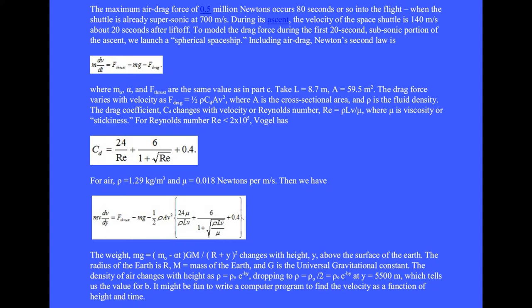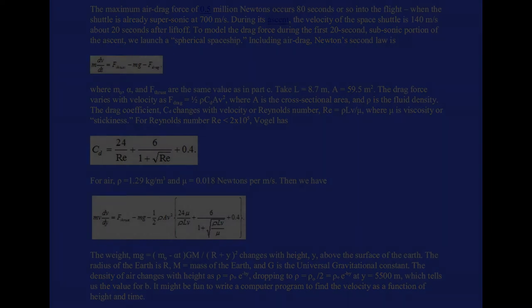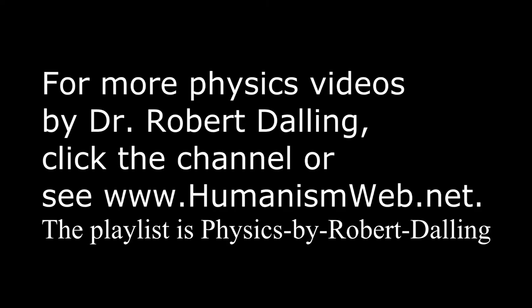The density of air changes with height as rho equals rho zero e to the minus b y, dropping to rho equals one half rho zero at y equals 5500 meters. Canceling rho zero we can solve for the value of b. It might be fun to write a computer program to find the velocity as a function of height and time.